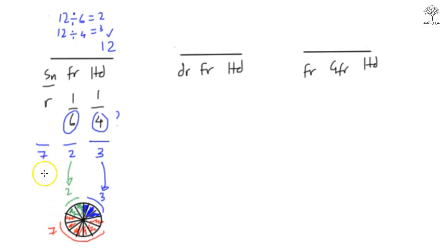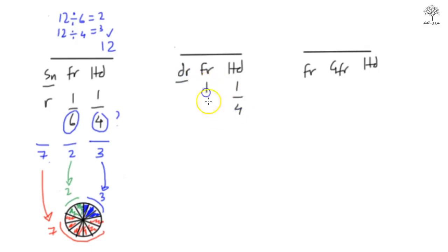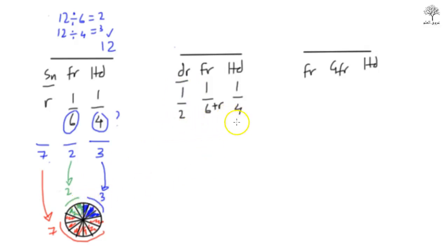Well done — congratulations if you got that right. If not, play it back and try again. Next example: husband — because there's a daughter involved, he gets a quarter. Father — because there's a daughter involved, he gets one sixth plus the remainder. And the daughter gets a half. So we have denominators of 4, 6, and 2.